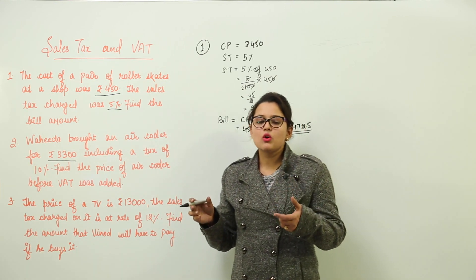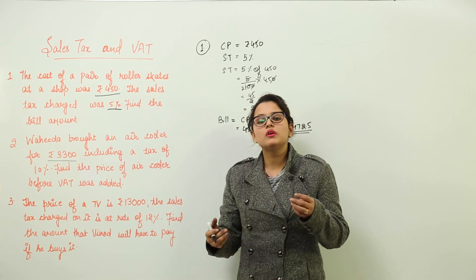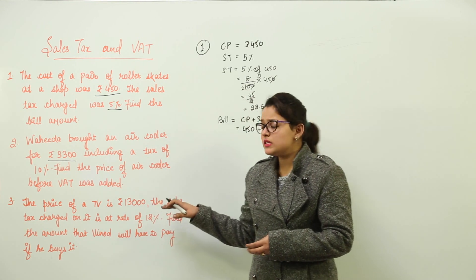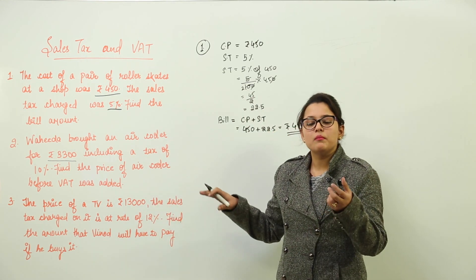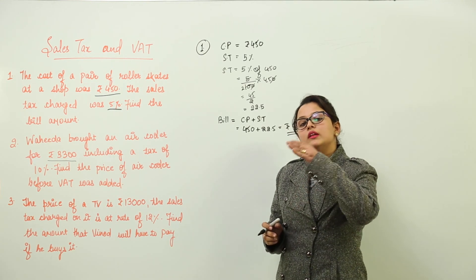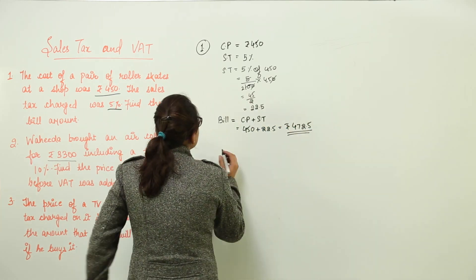See, the previous question was in which the product's original cost was given, the percentage of tax to be applied was given, and you had to calculate the final billing amount. But in here, in this question, the final amount is given, the percentage of tax is provided to you, but you have to find the original amount. Now how to do this question?